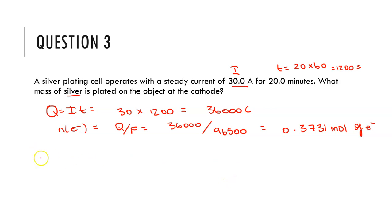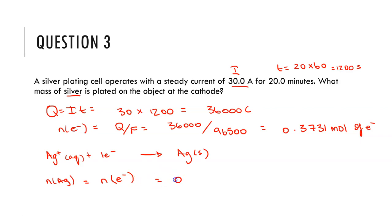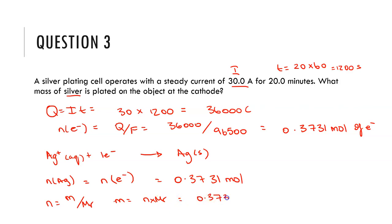Looking at the reduction reaction at the cathode for silver plating: Ag⁺(aq) plus 1 electron gives Ag solid. So the moles of silver plated equal the moles of electrons, which is 0.3731 moles. Using mass equals n times molar mass: 0.3731 multiplied by 107.9 grams per mole gives 40.25 grams of silver metal plated at the cathode.